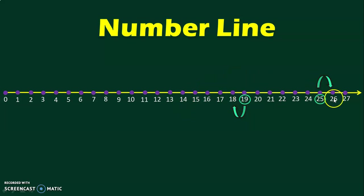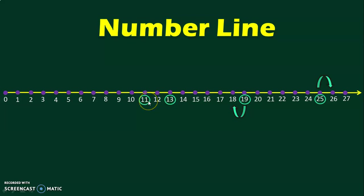It is very easy to identify the after number and before number using number lines. Once children are thorough with writing numbers in series, it is comfortable for them to do after numbers and before numbers. Now, what is the number between 11 and 13? Visibly, we can see that 12 is the number between 11 and 13. Between numbers are 1 more than the before number and 1 less than the after number. So, 12 is 1 more than 11 and 1 less than 13.